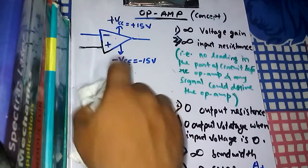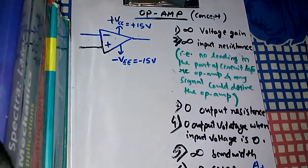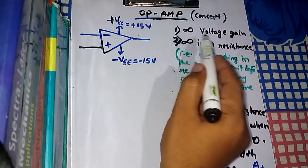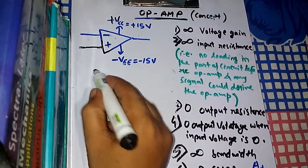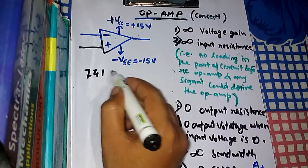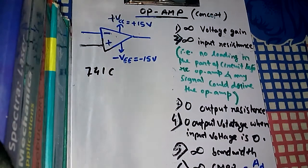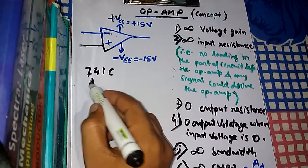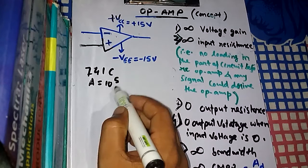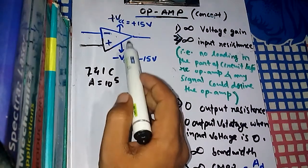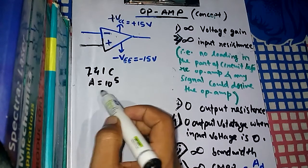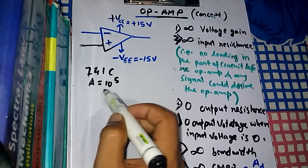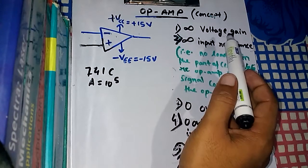Using the feedback circuit we can have any gain we want. But for the ideal operational amplifier — the open loop — the gain is considered infinite. It is not exactly infinite; the actual open loop gain is a very large number. For example, the 741C has an open loop voltage gain of 10^5. This is a huge but definite finite number, and since it is huge we generally say it is infinite.